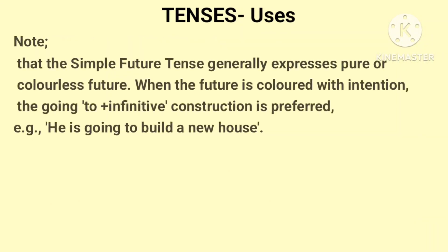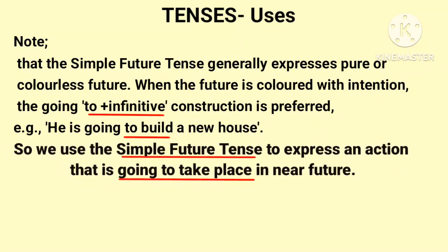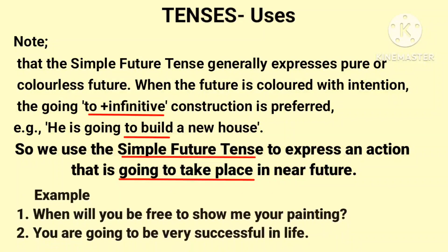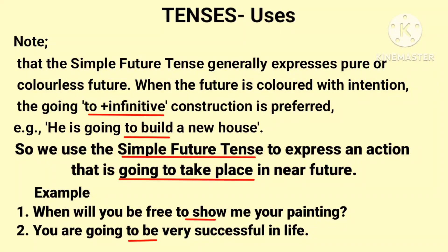Note: the simple future tense generally expresses pure or colorless future. When the future is colored with intention, the going to plus infinitive construction is preferred. For example, he is going to build a new house. We use the simple future tense to express an action that is going to take place in the future. It is used to refer to general statements about the future. For example: When will you be free to show me a painting?